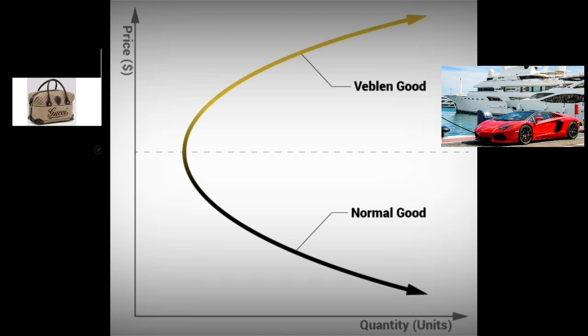The second reason is positional goods. Veblen goods are often positional goods and the quantity demanded depends on how the good is distributed in society. Veblen goods often exhibit a negative positional effect — that is, the quantity demanded increases with a reduction in the distribution of the good. This occurs because the utility gained by a consumer from holding such a good arises purely from the fact that few other consumers hold it. For example, the utility gained from owning a yacht arises primarily from the fact that few other people can afford one, making it a positional good.